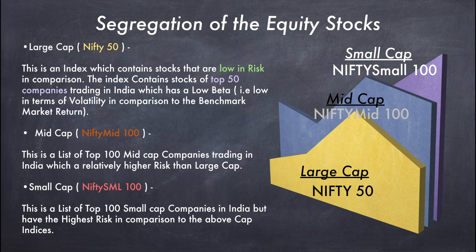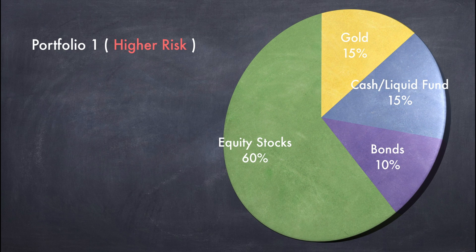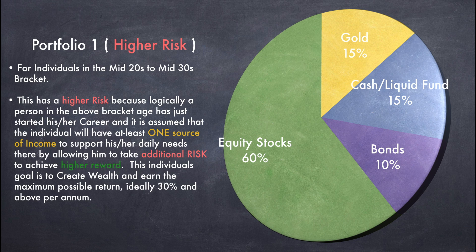The first portfolio is for an individual in the mid-20s to mid-30s bracket. For this kind of person it is recommended that they take a certain amount of risk. It is necessary that they invest 60% of their finances in the equity stock segment, 10% in bonds, 15% in gold and gold ETFs, and 15% in cash and liquid funds.